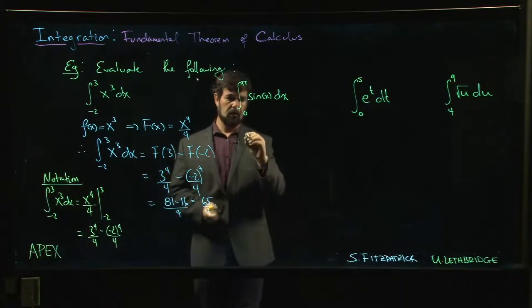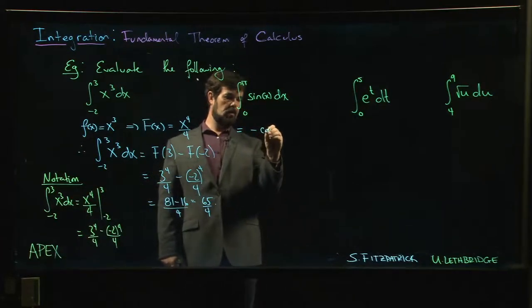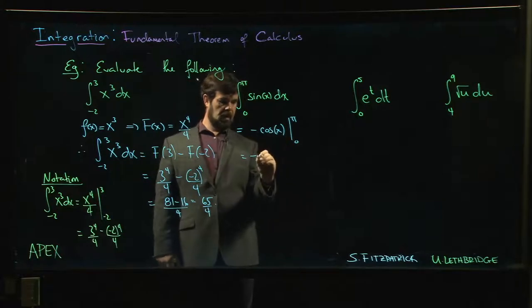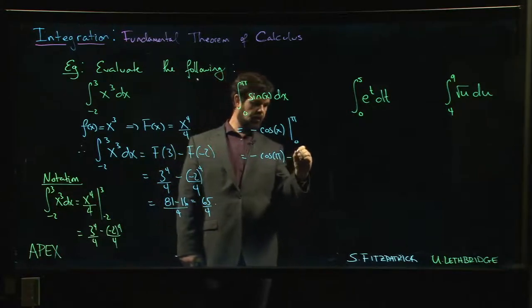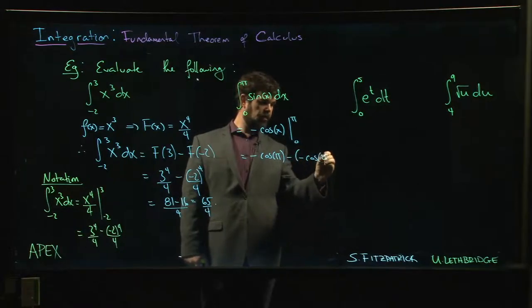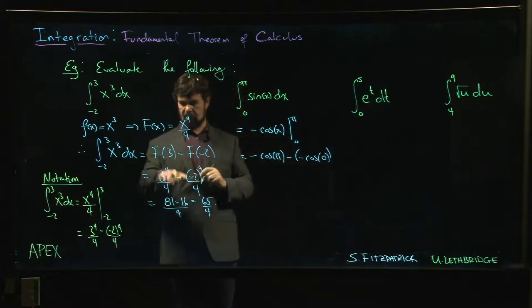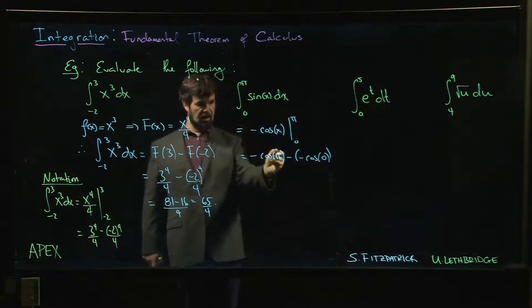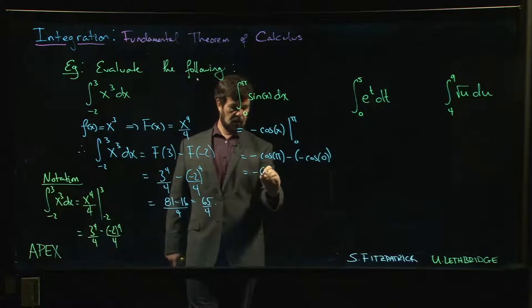So if we use this notation here, we can simply say that this is negative cos X evaluated from 0 to π. So that means it's minus cos π minus minus cos 0. You do have to be careful about signs, right? It's always upper minus lower, and if there's a minus sign in the function, you got to be careful. There's two negatives there.